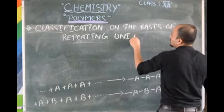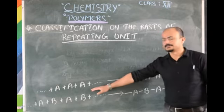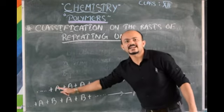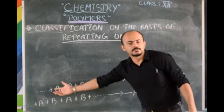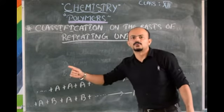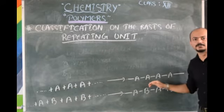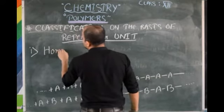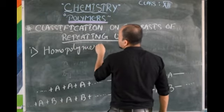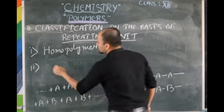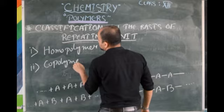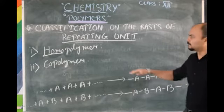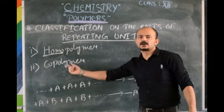Looking at this example — in this polymer, it is formed by only one type of molecule, that is A. Now whenever there is only repetition of one kind of monomer and that gives you a very long chain resulting in the formation of a polymer, then this is known as a homopolymer. So based on repeating unit, it can be classified into homopolymer. The name itself suggests: homo means same type, same kind.